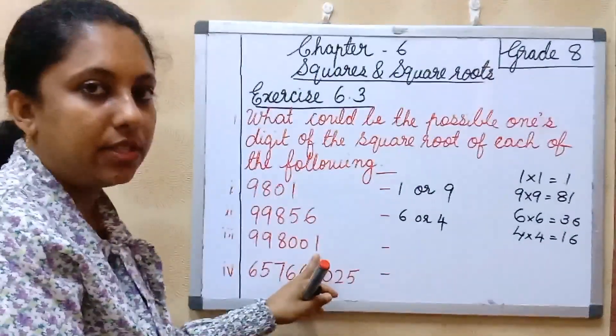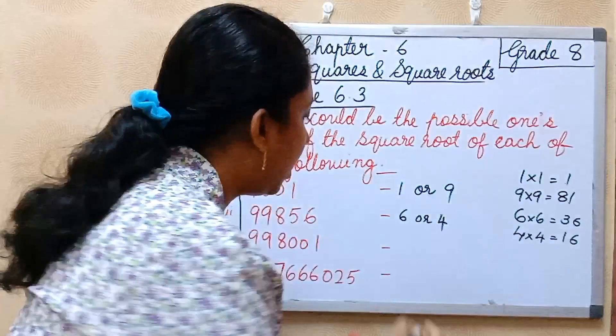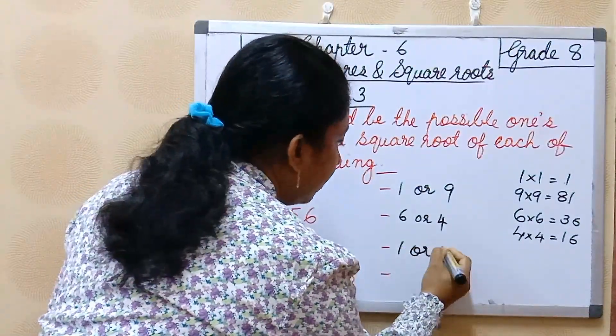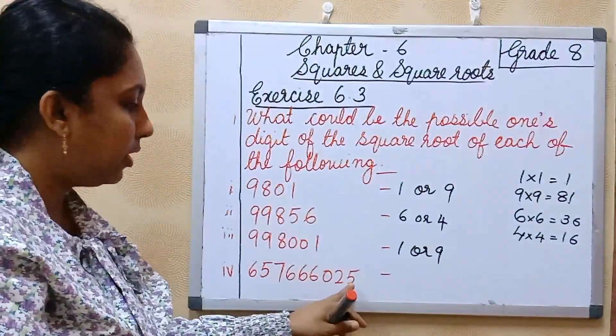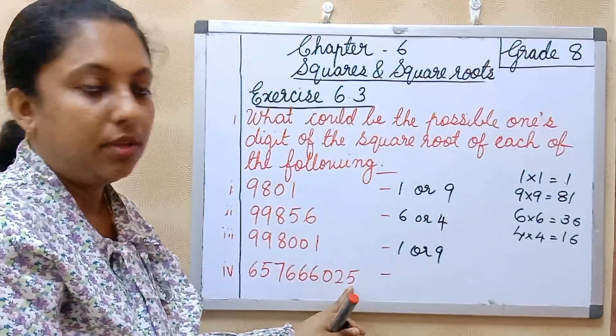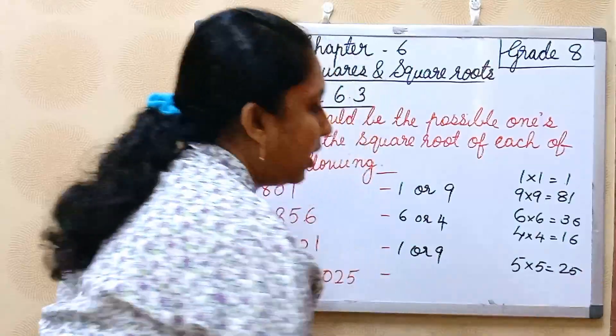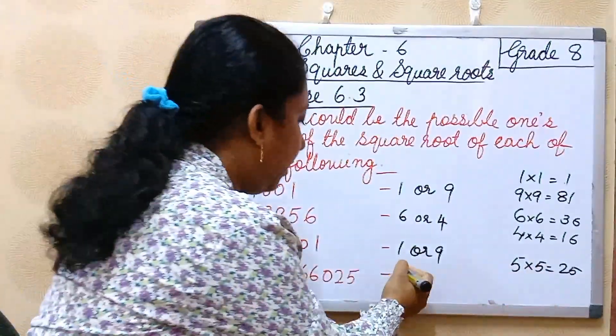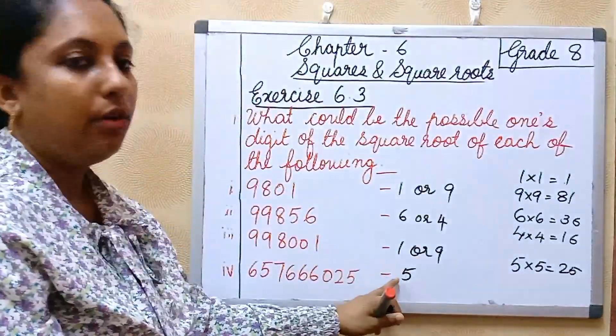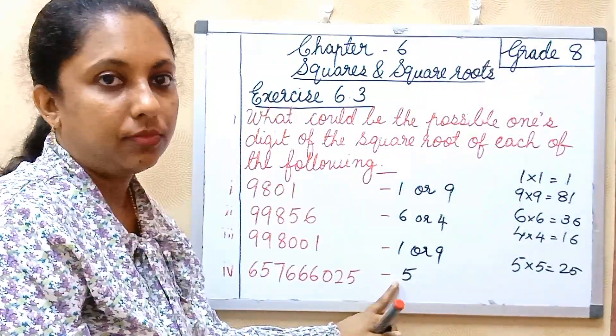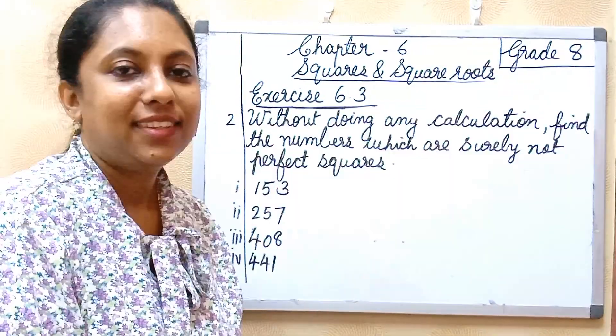Next one, this one also ending digit is 1, same thing, 1 or 9. The last question also ending digit 5, so 5 into 5 is equal to 25, only 1, so 5.